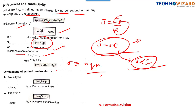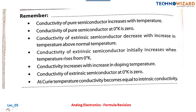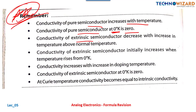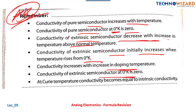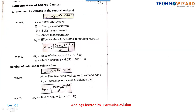Key points to remember about conductivity: conductivity of a pure semiconductor increases with temperature. Conductivity of a pure semiconductor at zero degrees Kelvin is zero — write this in your notes. Conductivity of an extrinsic semiconductor decreases with increase in temperature. For extrinsic semiconductors, as temperature rises from zero Kelvin, conductivity initially increases with temperature; at a certain temperature it becomes equal to that of intrinsic semiconductor.